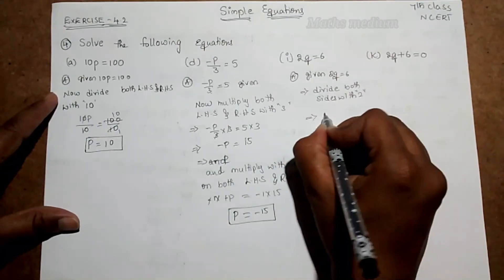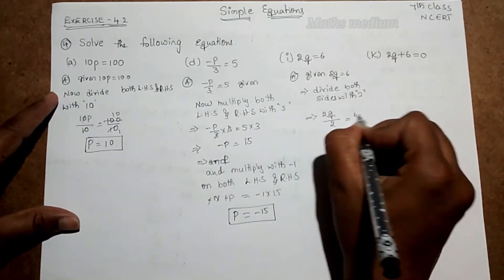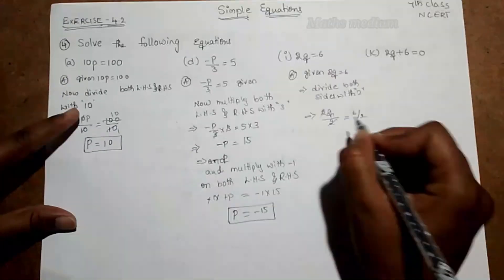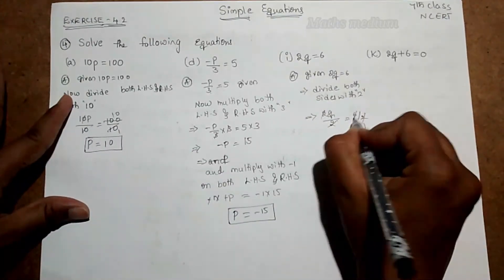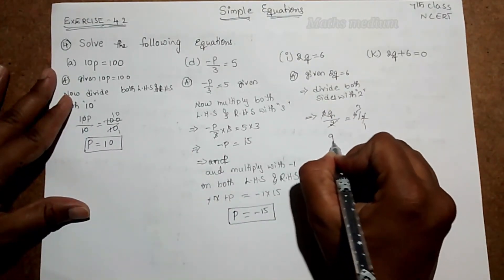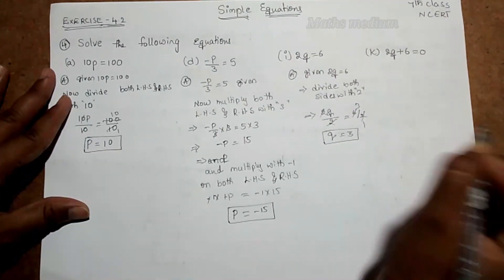So here 2q by 2 is equal to 6 by 2. So 2 and 2 get cancelled. 2 ones are 2, 3s are 6. So q is equal to 3. This is the answer we get.